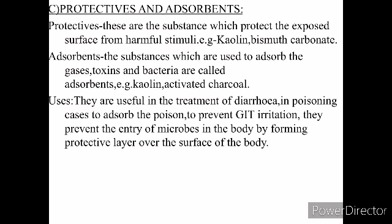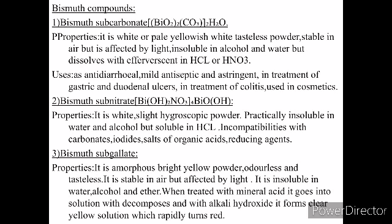They are useful in the treatment of diarrhea, in poisoning cases to adsorb the poison, and to prevent GI irritation. They prevent the entry of microbes into the body by forming a protective layer over the surface. Bismuth subcarbonate, (BiO)2·CO3·2H2O, is a white to pale yellowish-white odorless powder, stable in air but affected by light, insoluble in alcohol and water but dissolves with effervescence in HCl or HNO3. It is used as an antidiarrheal, mild antiseptic and astringent, in the treatment of duodenal and gastric ulcers, colitis, and also in cosmetics.